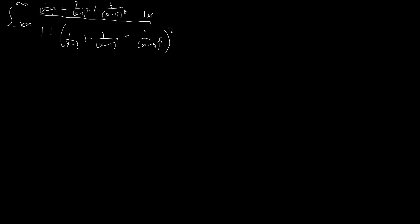For the most part, it should be clear that the obvious substitution here is u equals this whole mess. I'm not even going to write it all down. When we differentiate this, we're going to get basically exactly what's on the top, just negative. So u equals — I'm not even going to write it down — but I'm just going to make the substitution. And so this is a negative du.